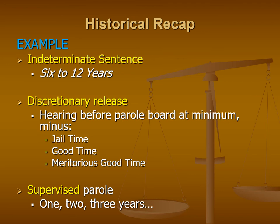The parole board will make a decision. They can decide that the person is now eligible to be released into society, or they can say you're not quite ready and send them back to prison for a specified period of time — whether it's a year, several years, or six months, depending upon the jurisdiction. The offender would then return to the parole board at the future date set. Once an individual has pleased the parole board and shown they are eligible for release, the parole board will determine they're ready and release them onto supervised parole.